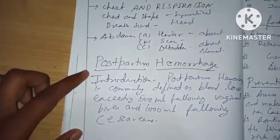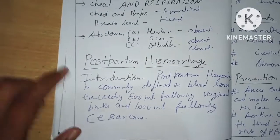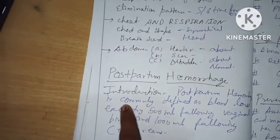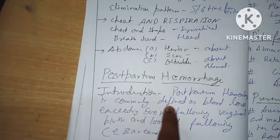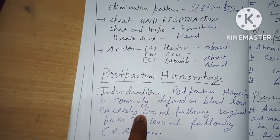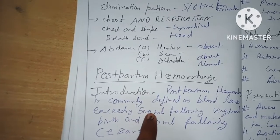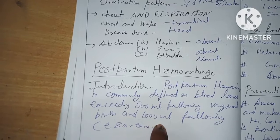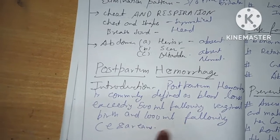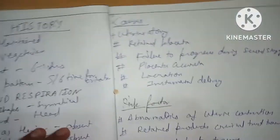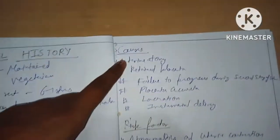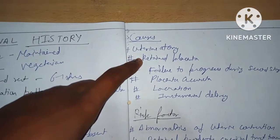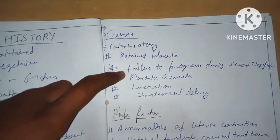Postpartum hemorrhage is commonly defined as blood loss exceeding 500 ml following vaginal birth and 1000 ml following cesarean section. The causes of postpartum hemorrhage include uterine atony, retained placenta, and failure to progress in the second stage of labor.